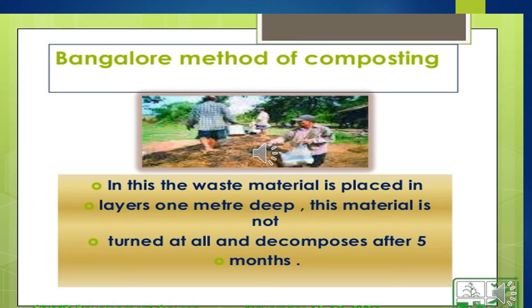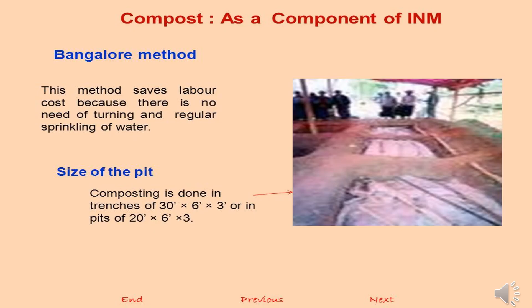In the Bangalore method, the waste material is placed in a layer 1 meter deep, is not turned at all, and decomposes after 5 months. This method saves labor cost because there is no need for turning organic material or regular sprinkling of water.